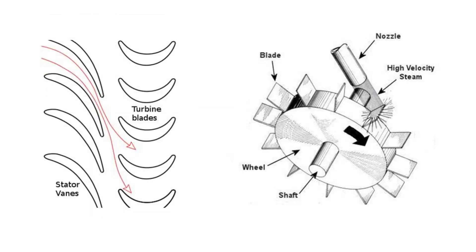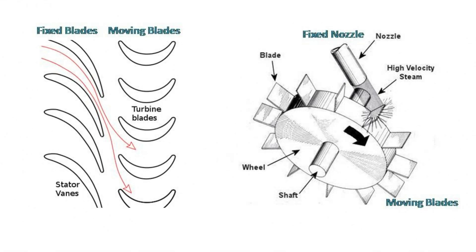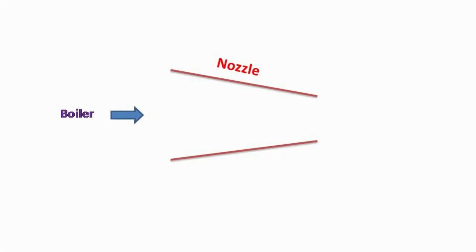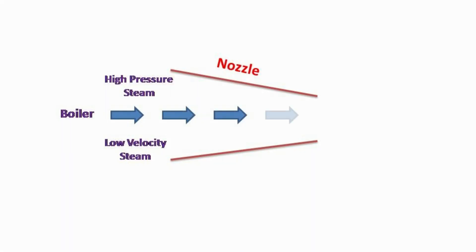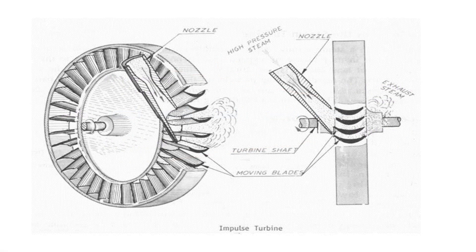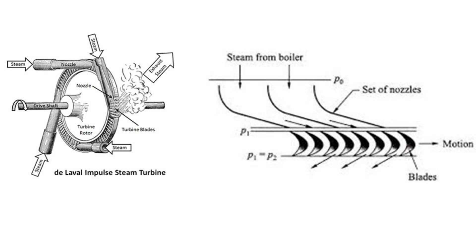Basically, in a steam turbine, the present energy of steam is converted into kinetic energy by allowing the steam to flow through one or more fixed plates or fixed nozzles. Due to the high-pressure drop in the nozzles, the velocity of steam increases. The high-velocity steam coming out from the nozzle strikes the rotating blades which are fitted on the disc or rotor mounted on a shaft. This high-velocity steam produces dynamic pressure and also applies an impulsive force on the blades. Due to the change in momentum, the turbine shaft starts rotating in the direction of the applied force.